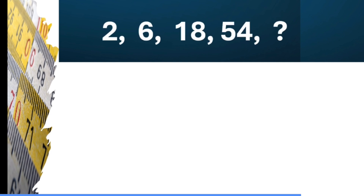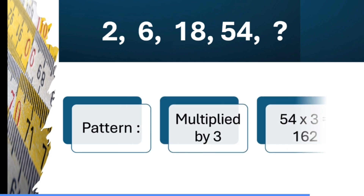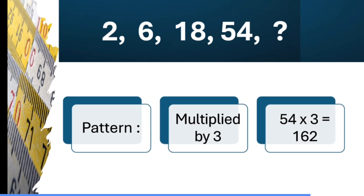Values are increasing: 2, 6, 18, 54. The next term is a product of 3 — the pattern is multiplied by 3. So 2 into 3 equals 6, 6 into 3 equals 18, 18 into 3 equals 54, and the next term is 54 into 3 equals 162.